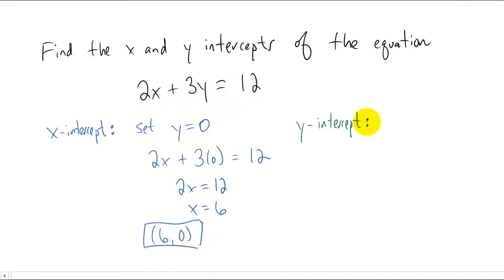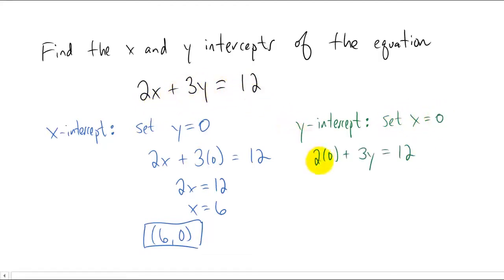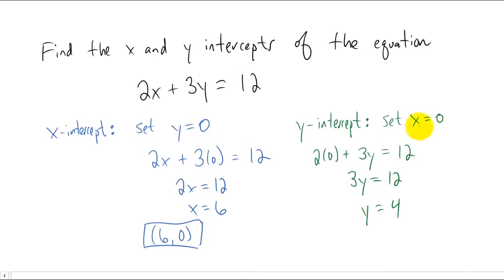Now let's find the y-intercept. We know from the graph above that for all y-intercepts, the x value is going to be zero, so we're going to set x equal to zero. If we set x equal to zero in our equation, the first term goes away completely and we're just left with 3y equals 12. Dividing both sides by 3 to get y by itself, we get y equals 4. So the y-intercept is the point (0, 4).